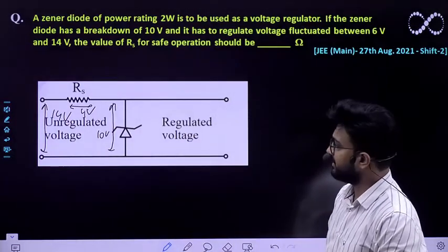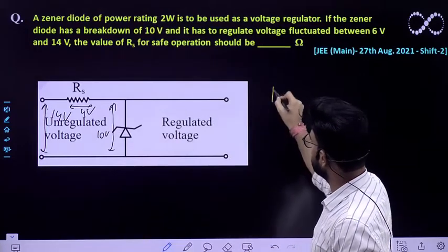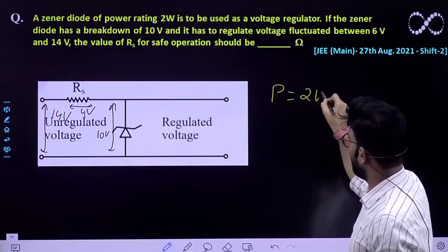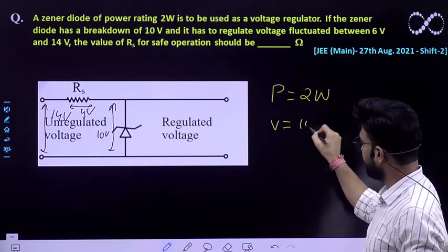So what will happen is power is also given to you, the power of this diode is 2 watt. Again voltage is also given to you across the diode, it is 10 volt.